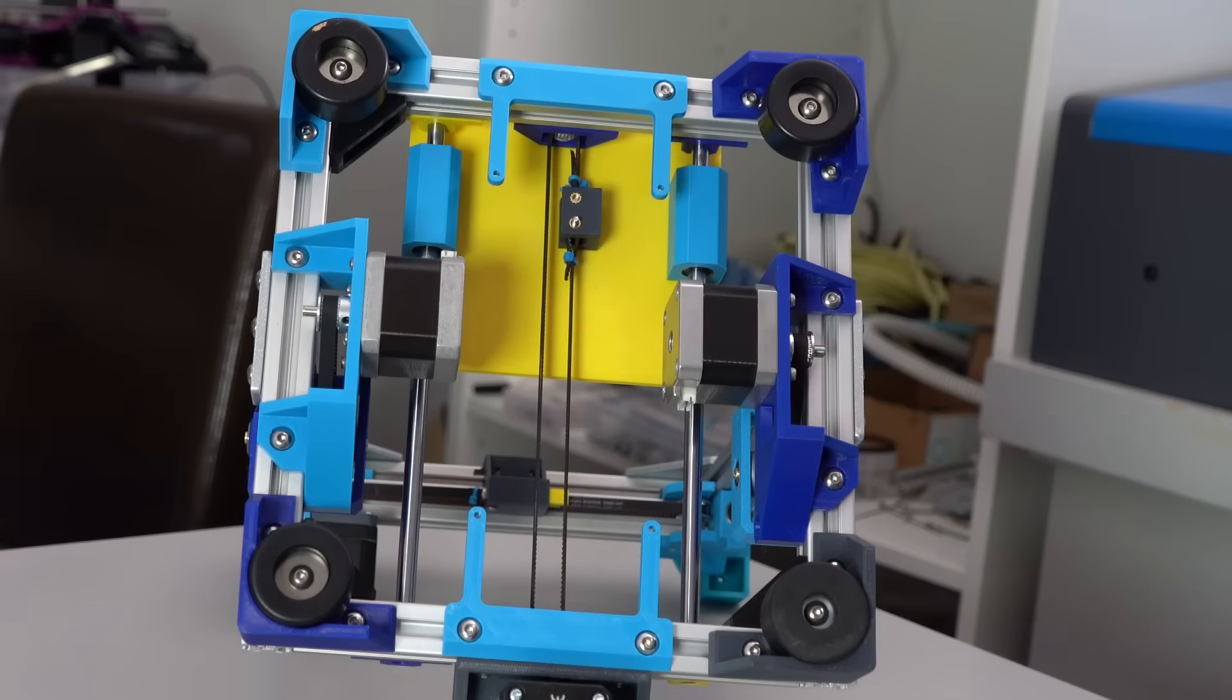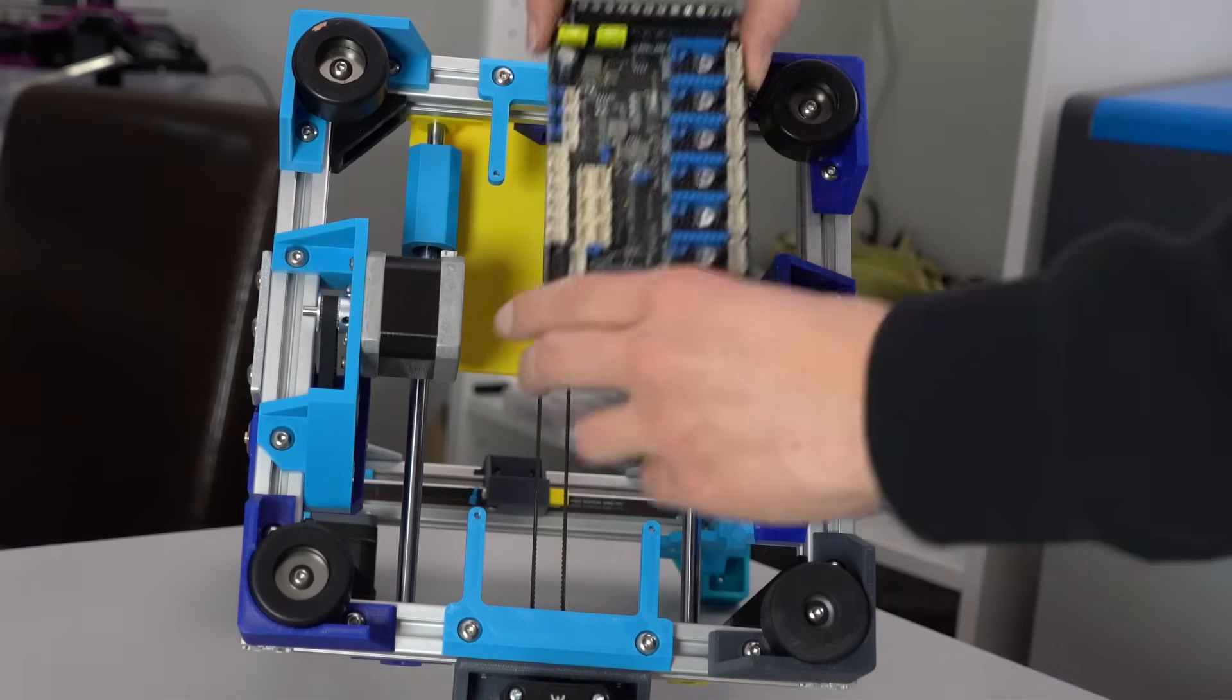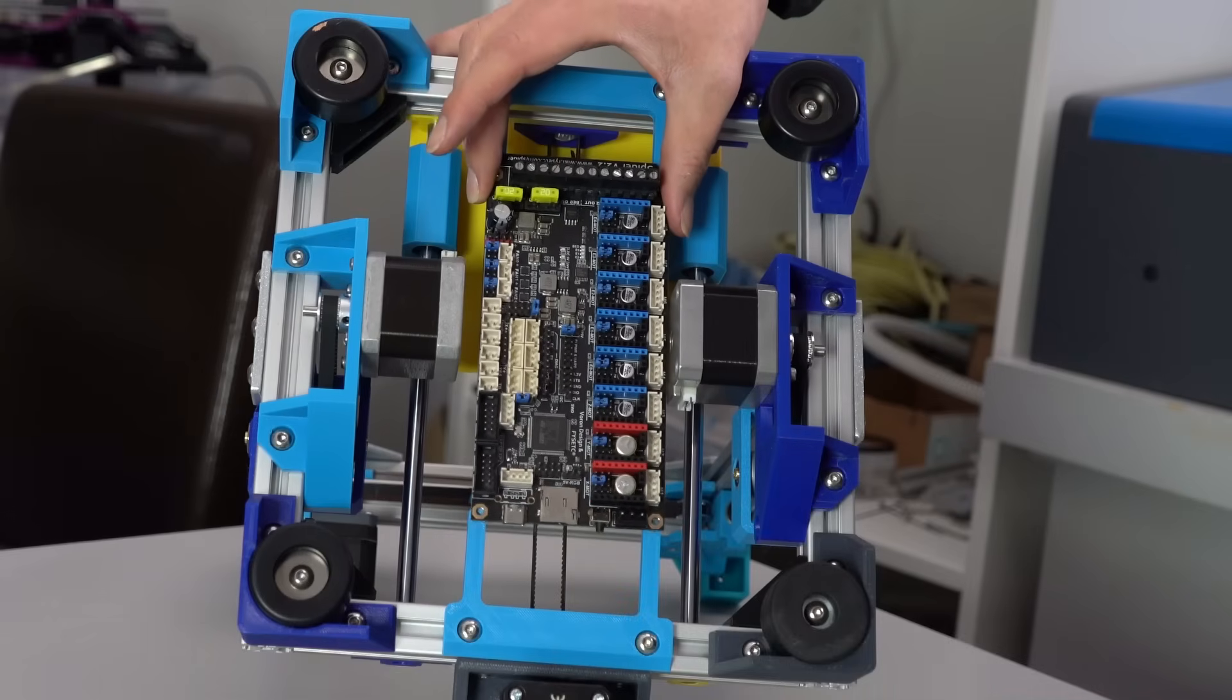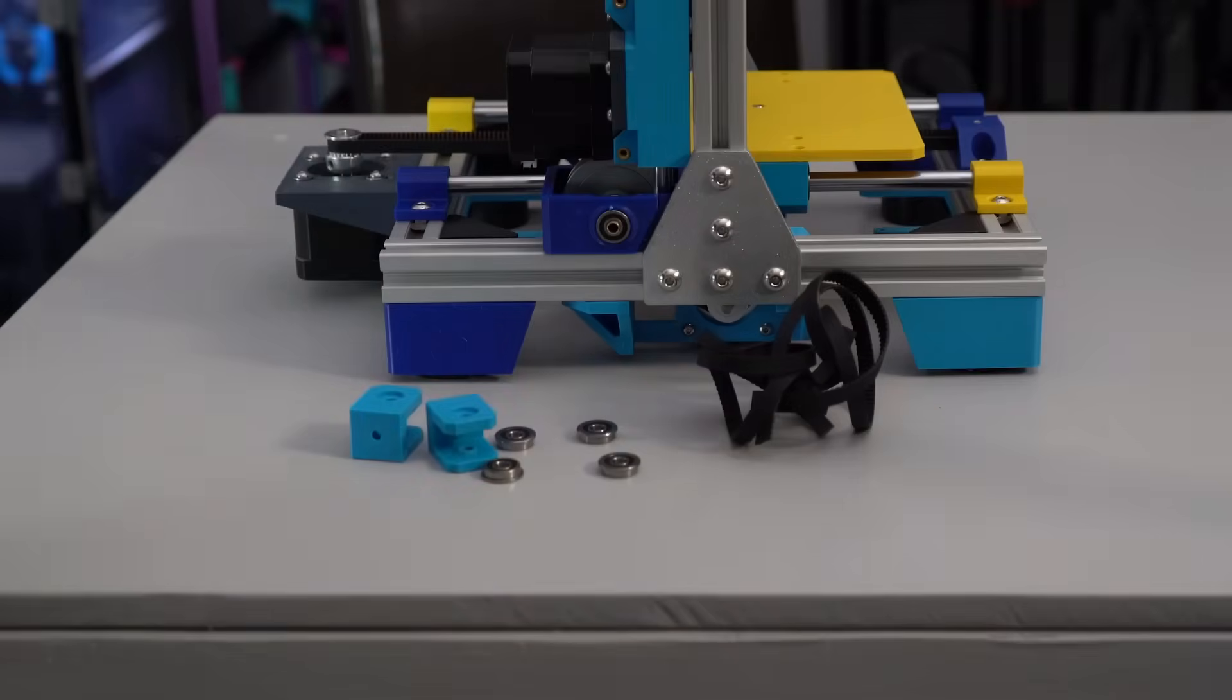For the Z, you need to use smaller, 34mm NEMA 17s, otherwise your main board won't fit between them. I'm using old Creality motors here, and these work just fine. We're almost done with the Z, all that's left to do is just to route the belts.